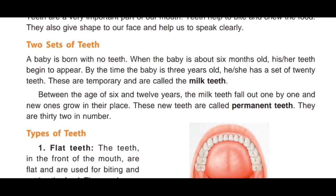Between the age of six and twelve years, the milk teeth fall one by one and new ones grow in their place. These new teeth are called permanent teeth and they are 32 in number. Chhe varsh se baarah varsh ki avastha tak ye milk teeth ek ek karke girne lagte hain aur unki jagah par permanent teeth aane lagte hain. In permanent teeth ki sankhya 32 hoti hai.